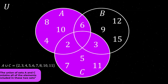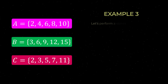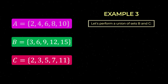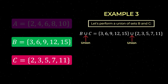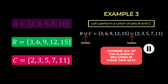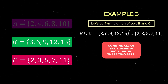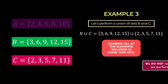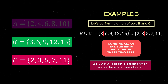Let's return to our sample sets to go through a third example. Let's now perform a union of sets B and C, indicated as follows. Again, as an exercise, pause this video and try to solve this yourself, and when you have done so, press play and I will go through the solution. Combining all of the elements included in these sets and not repeating the element 3, which the sets have in common, we obtain the following.